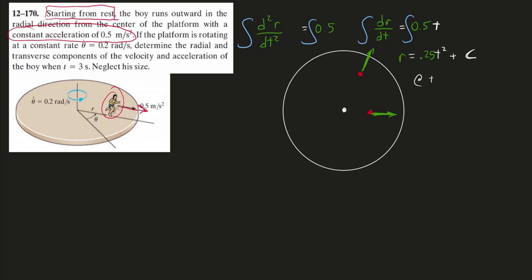The question is, at time equals zero, where does this guy start running from? It says starting from rest, the boy runs outwards in the radial direction from the center of the platform. So we know his starting r coordinate is zero. If I plug in zero for t and zero for r, c must equal zero.